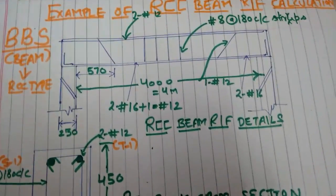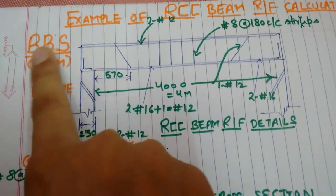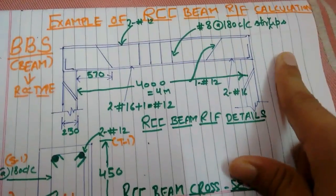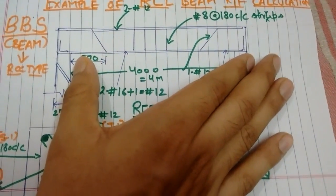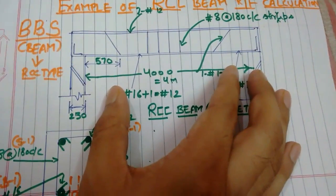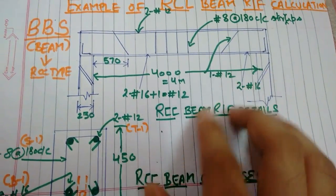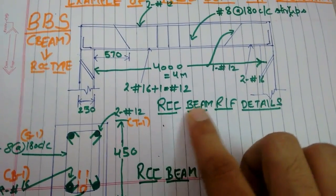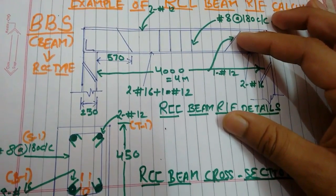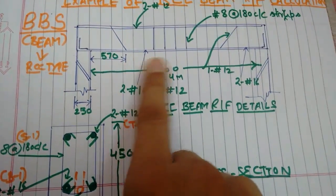If we take a closer look, this is the BBS, bar bending schedule for RCC type. You can see this is our beam, this is four meter or equivalent to four thousand millimeters.